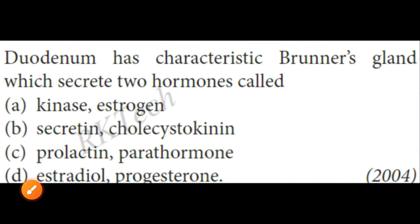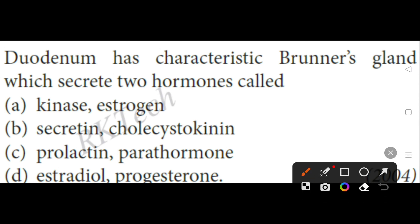The duodenum has characteristic Brunner's glands which secrete two hormones. The options include secretin, cholecystokinin, prolactin, and others. The correct option will be B — secretin and cholecystokinin.